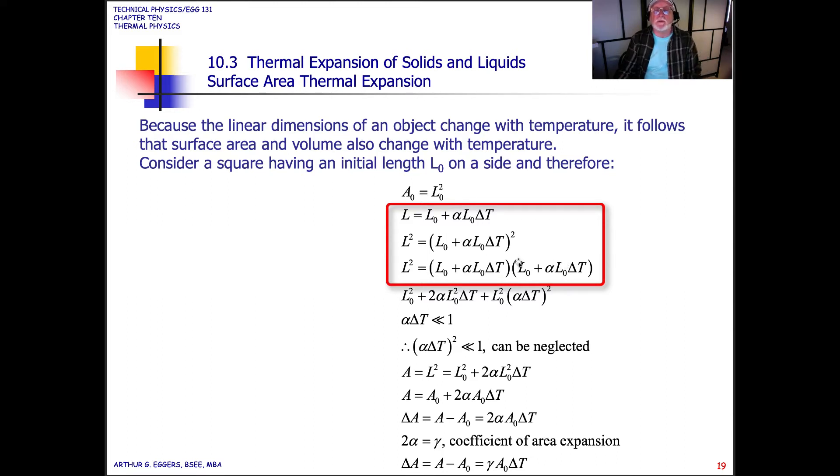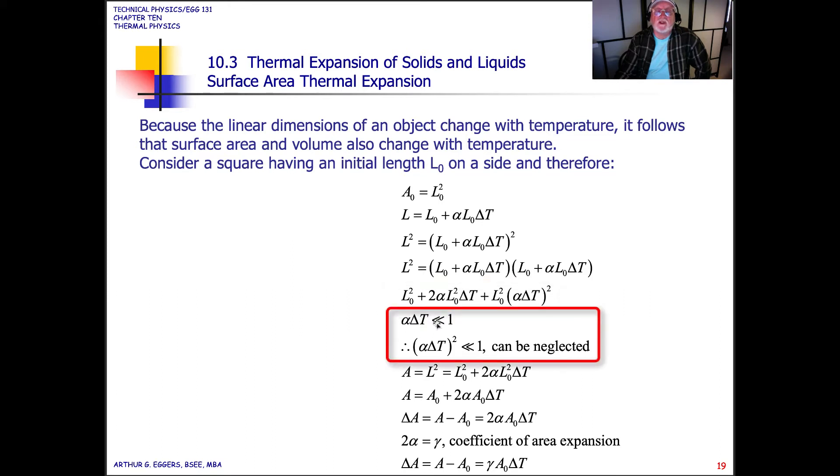Remember, what we're trying to do here is come up with a relationship for area given our length measurements. So L-squared plus two times the coefficient times L-squared initial times the change in temperature plus L-squared-naught times the coefficient times delta T-squared. In this case, they're saying that alpha times delta T is much smaller than one, so we're not looking for a lot of change. Therefore, alpha delta T-squared less than one can be neglected. It's one of those things we make an assumption, we get rid of it, and we don't worry about it again.